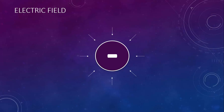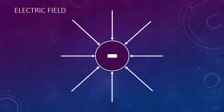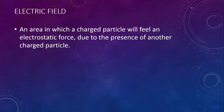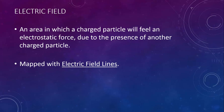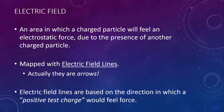This leaves us with an electric field map that looks like this. An electric field is an area in which a charged particle will feel an electrostatic force due to the presence of another charged particle. Like we just did, we map electric fields with electric field lines, and as you saw, they're actually arrows. Electric field lines are based on the direction in which a positive test charge would feel force — that's exactly what we just did in our previous two examples.